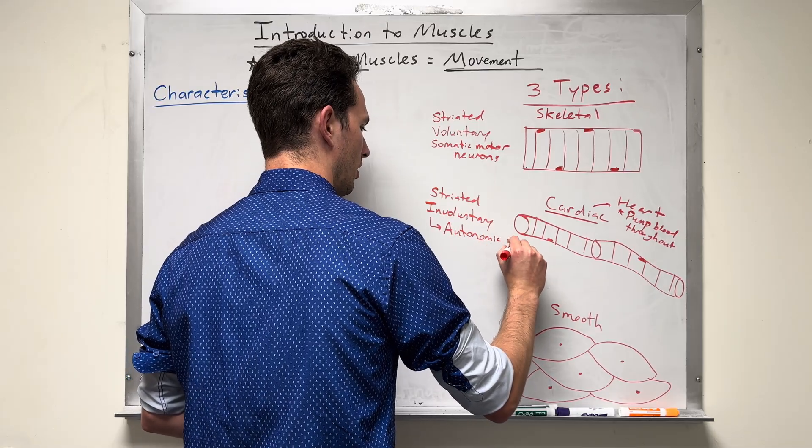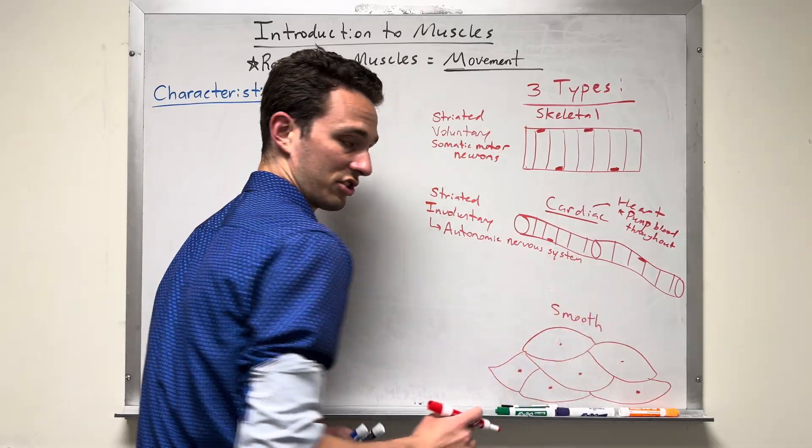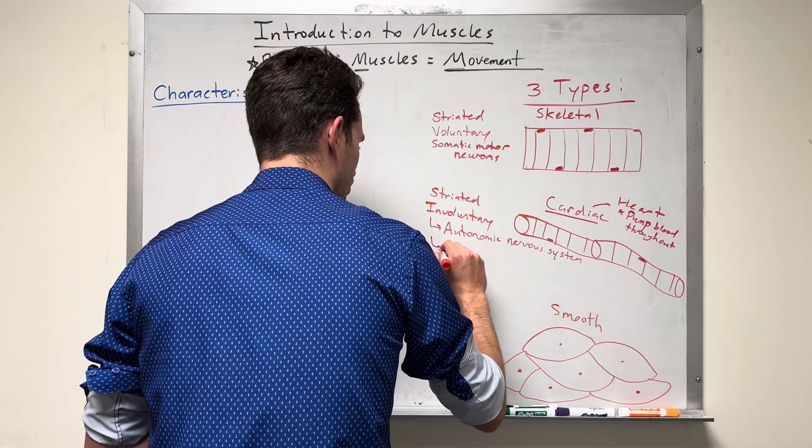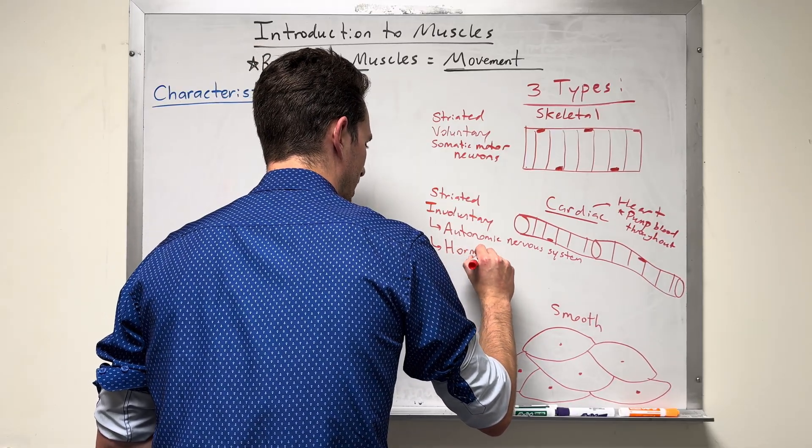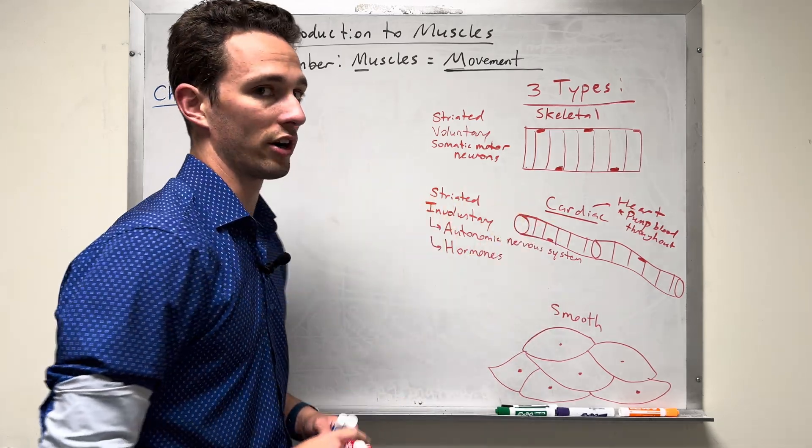We say that the cardiac muscle is controlled by the autonomic nervous system. So autonomic nervous system, that's basically your automatic nervous system. It's doing it automatically. You don't have to think about it. And it also is controlled by hormones. So these two things control that cardiac muscle tissue.